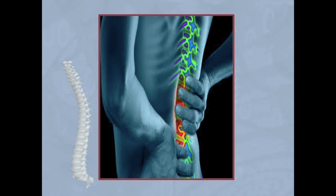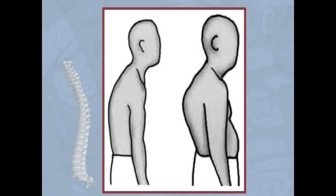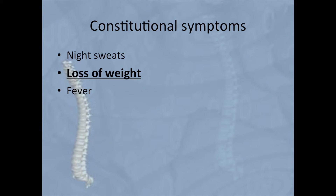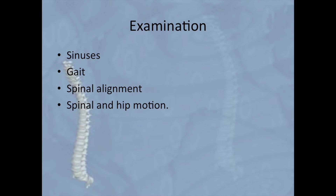The clinical presentation depends on the stage of disease, site, and presence of neurological deficiencies, abscesses, or sinus tracts. The patient often has back pain and spinal deformity; one third cannot walk due to neurological compromise. Patients may also have constitutional symptoms such as night sweats, loss of weight, and fever. Examination should include detection of sinuses and gait, evaluation of spinal alignment, assessment of spinal motion and hips, and a meticulous neurological exam.